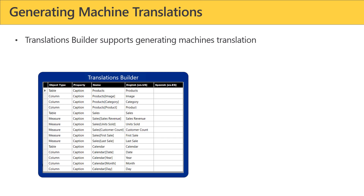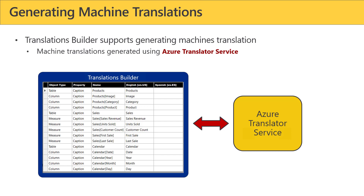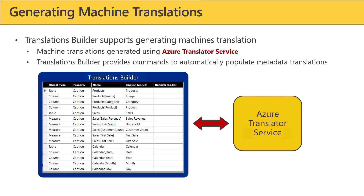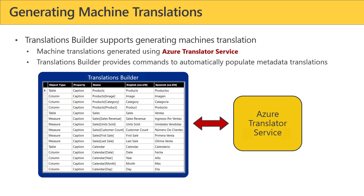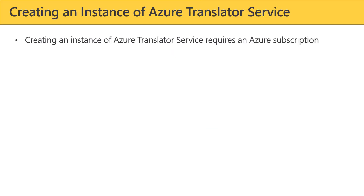Translations Builder supports generating machine translations by making web API calls on an Azure service known as the Azure Translator Service. The way things work is that Translations Builder provides commands to automate populating metadata translations. As soon as you've created the Spanish column, click a button and we can automatically populate whether it's the final version or the first pass at creating translations. In order to use these capabilities, you're going to need to have access to an instance of the Azure Translator Service in the form of having a key and a location value to configure.